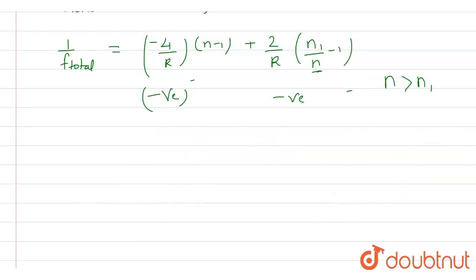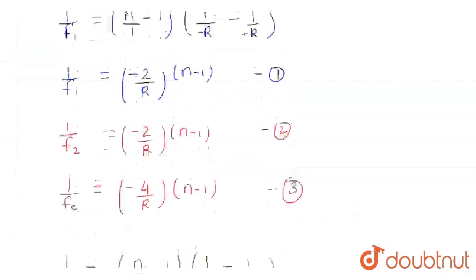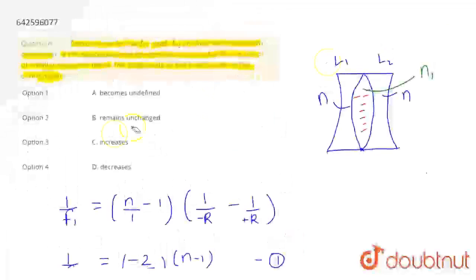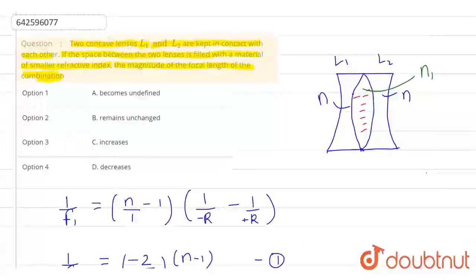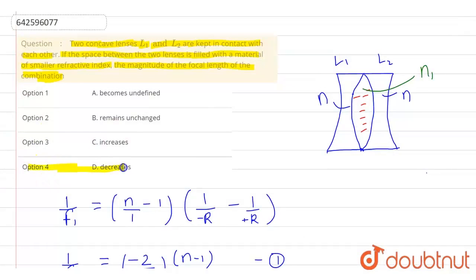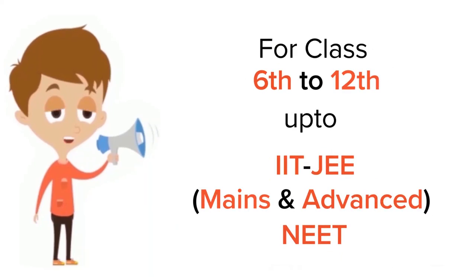So in magnitude, after insertion of the material the focal length is decreasing. Therefore, option D is the right answer: the magnitude of the focal length is decreasing. That's all for this question, thank you for watching.